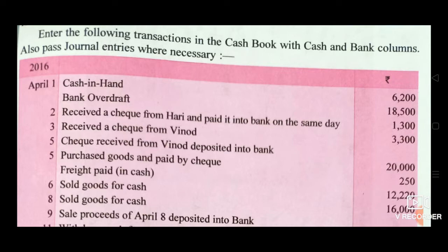3rd April: received a check from Vinod, Rs. 3,300. On 5th April, check received from Vinod deposited into bank. 5th April again: purchased goods and paid by check Rs. 20,000. 7th: freight paid in cash Rs. 250.